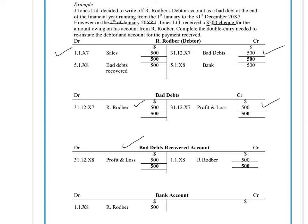The first thing we do is reinstate the debtor — it's almost like recreating the debtor. So we credit the bad debts recovered account and we debit Rodber's account. You've effectively recreated the original $500 debt that Rodber owed us as a debtor. Then we credit Rodber's account because he's paid us, and we debit our bank account.